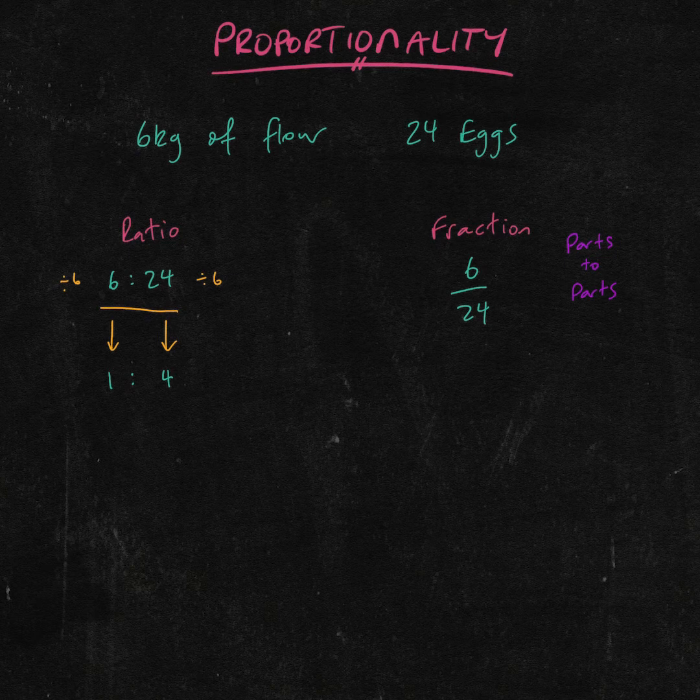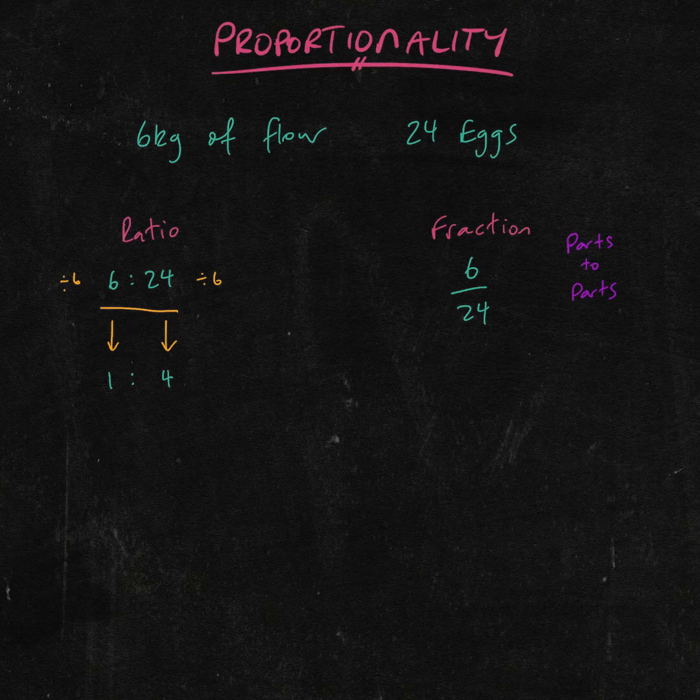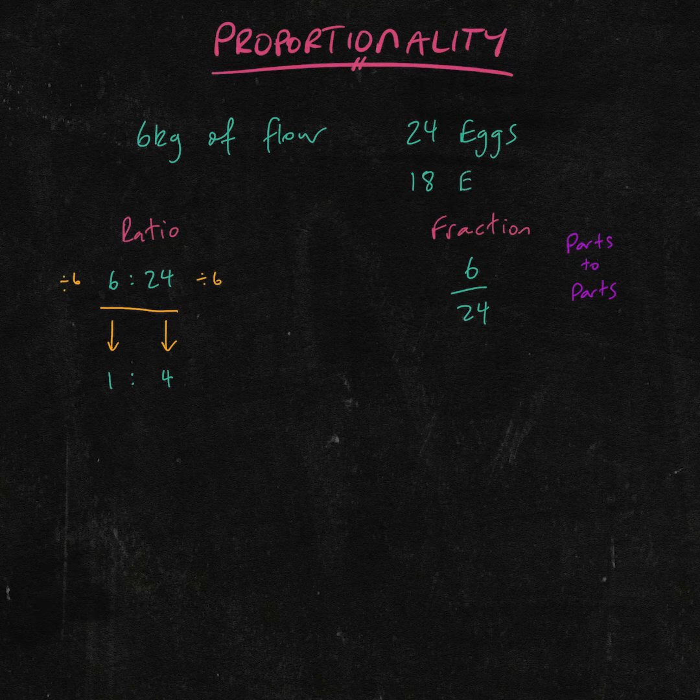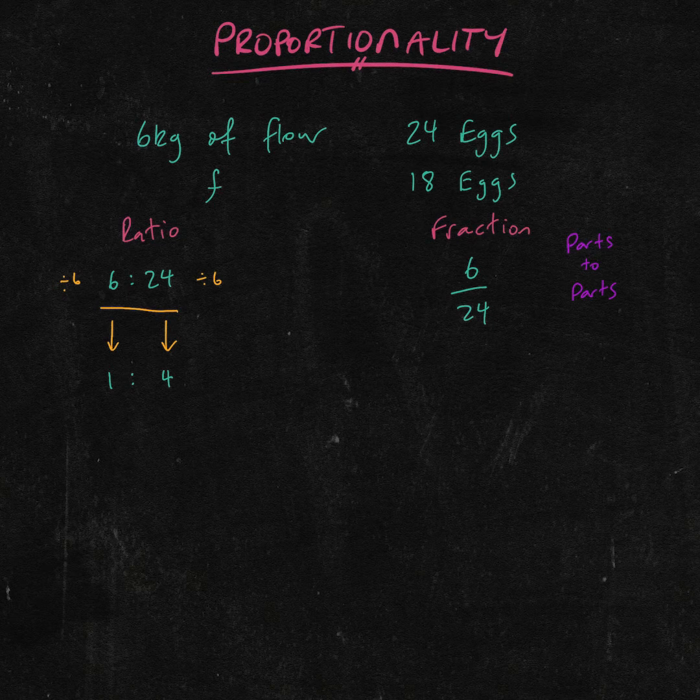So let's say I go to make these cakes using the ratio of 6 to 24. But when I go to my pantry, I only have 18 eggs. So I need to work out how much flour to add to 18 eggs. Now, there's a couple of ways I can do this.